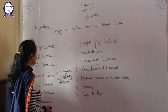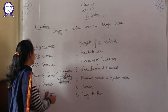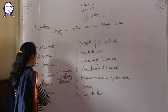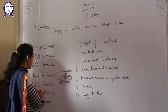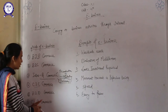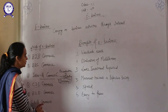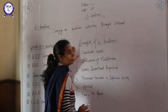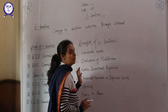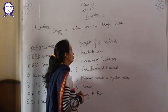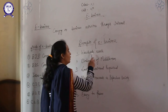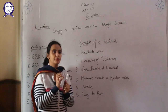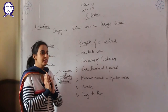So this was the scope of e-business: business-to-business, business-to-customer, intra-B, consumer-to-consumer, business-to-employees, and consumer-to-business. Now, the benefits of e-business — what are the benefits? The first benefit is worldwide reach. With the help of the internet, a business firm can reach an extended market.